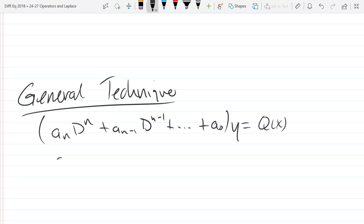So step one, factor. The a_n will factor out and you'll be left with (D minus r1), (D minus r2), (D minus rn). These are the roots. These r's are the roots of the polynomial above.